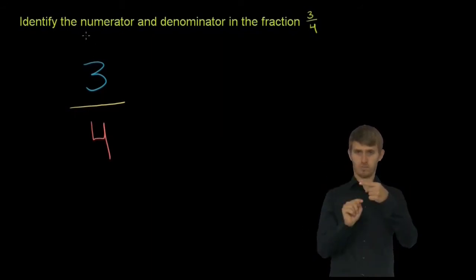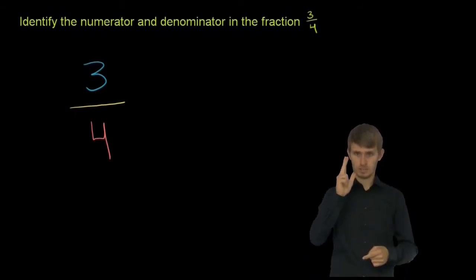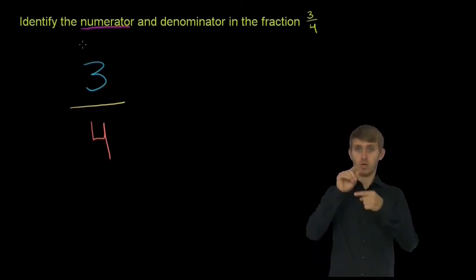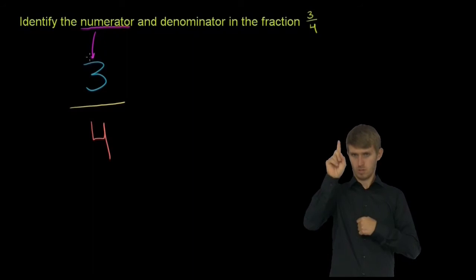Now, they want us to identify the numerator and the denominator. So the numerator is just the number on top. The numerator is the 3 right there.